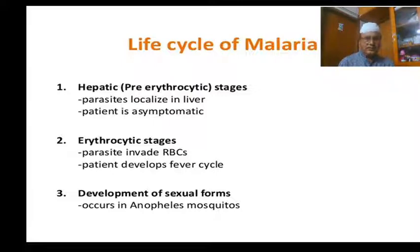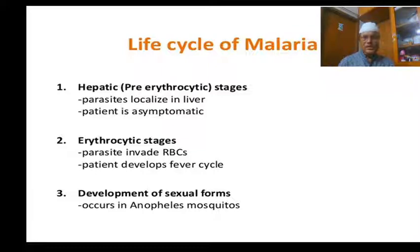In the hepatic stage, parasites localize in the liver and the patient is asymptomatic. In the erythrocytic stage, parasites invade red blood cells and patients develop shivering chills. Development of sexual forms occurs in the Anopheles mosquito.